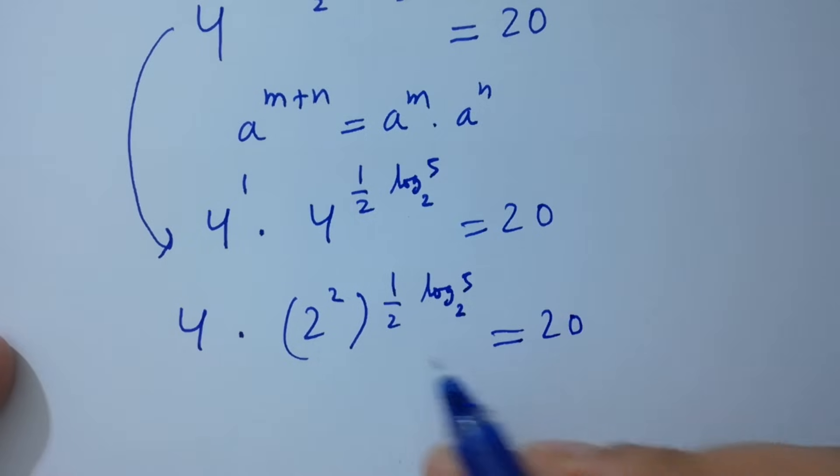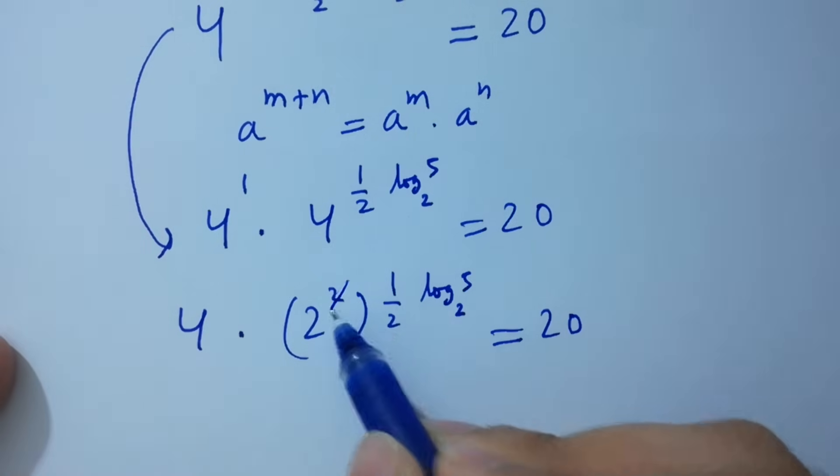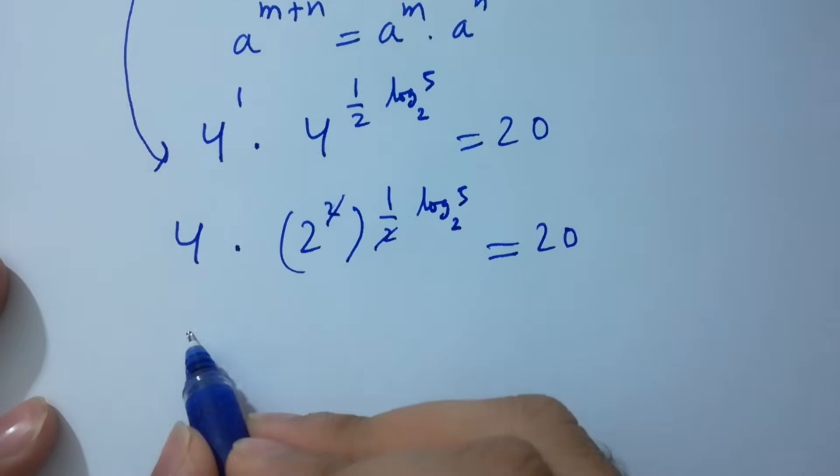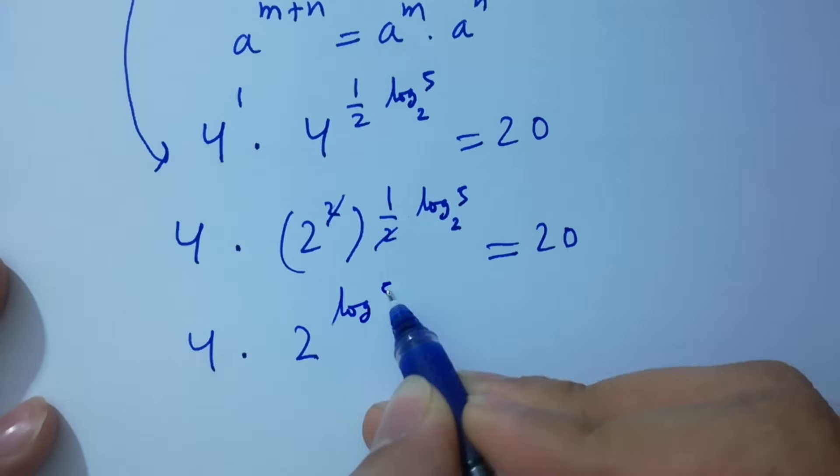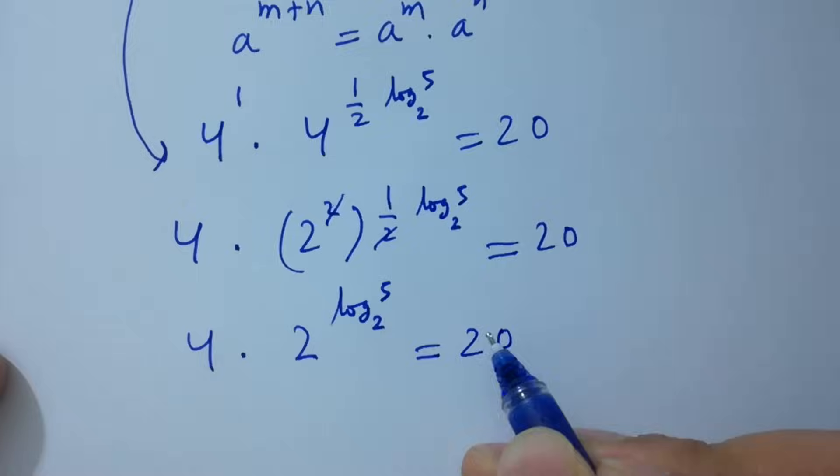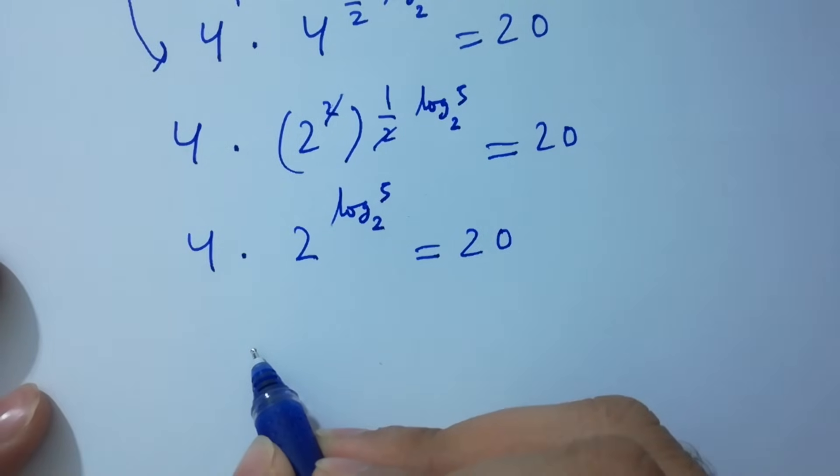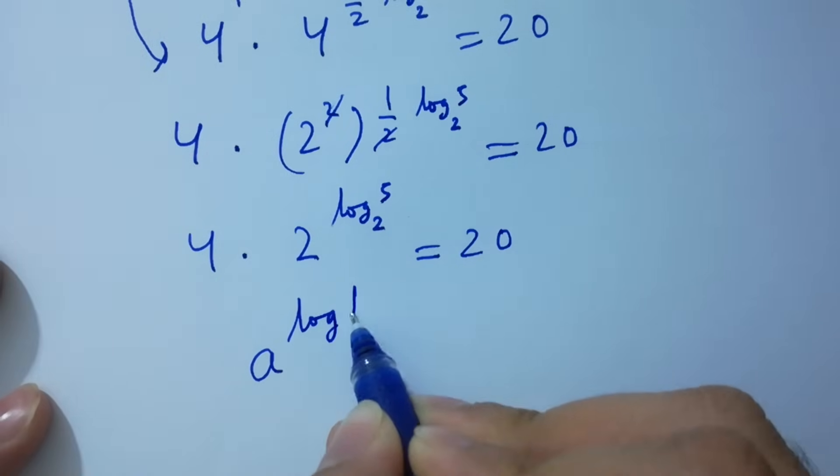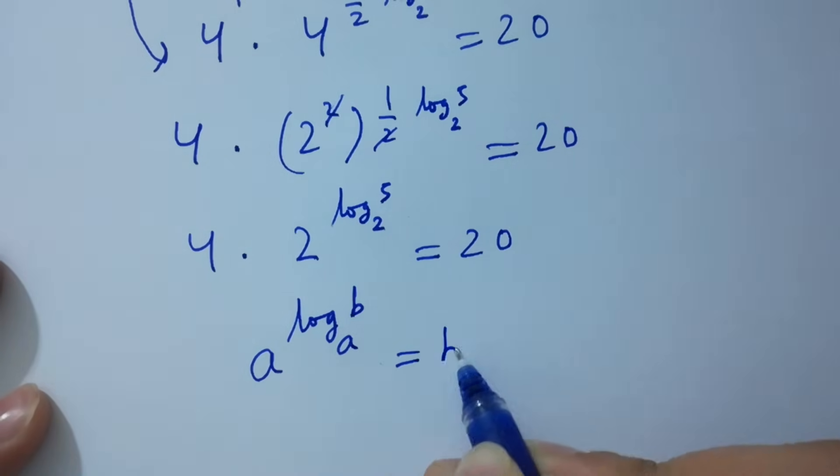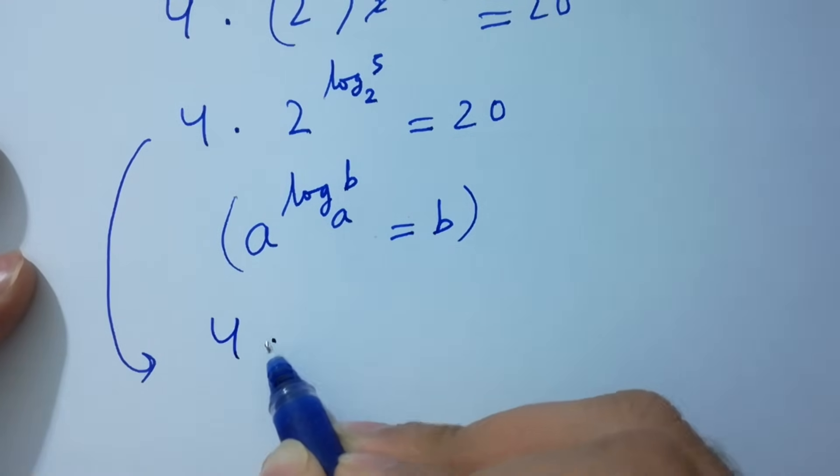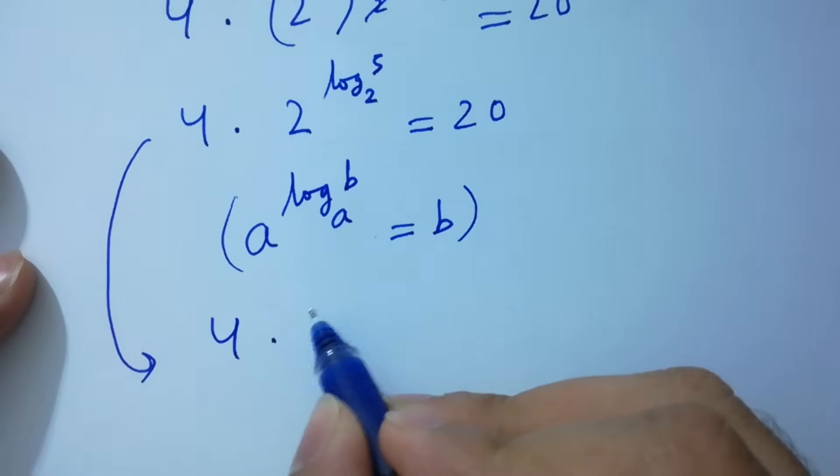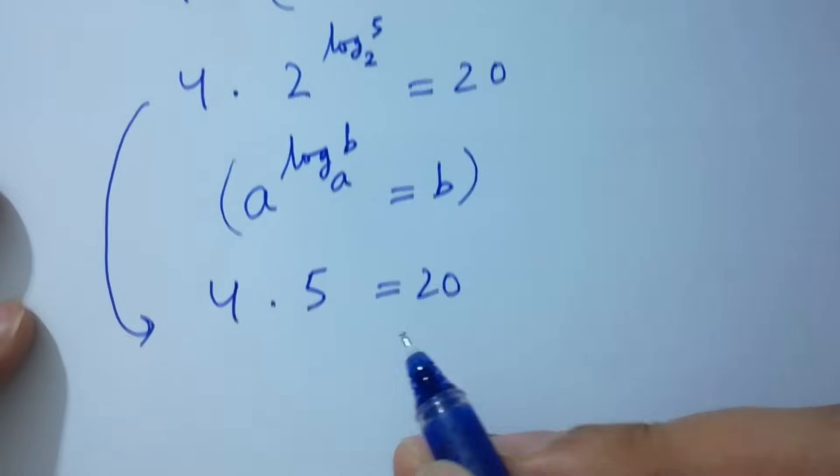Here 2 and 2 cancels. 4 times 2 to the power log 5 to the base 2 equals 20. As we know, a to the power log b to the base a equals b.